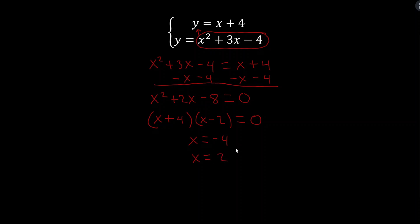A common mistake students make is circling x equals negative 4 and x equals 2 and saying they're done. But remember, solutions to systems are ordered pairs — we need an x and a y for each solution. For x equals negative 4, I'll plug negative 4 into the first equation, which looks a bit easier. I get y equals negative 4 plus 4, which simplifies to y equals 0.